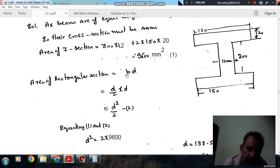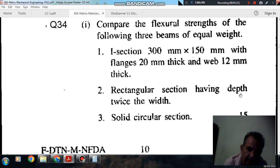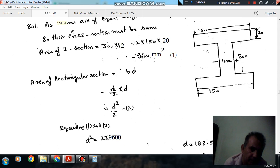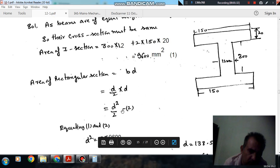Now area of rectangular section, given as b into d. So b is here d by 2, because it is given that second section is rectangular section and depth is twice the width. So it means width is half of depth, so that is d by 2 into d. So that is d square by 2. This is equation number 2. So this is the area of rectangular section.